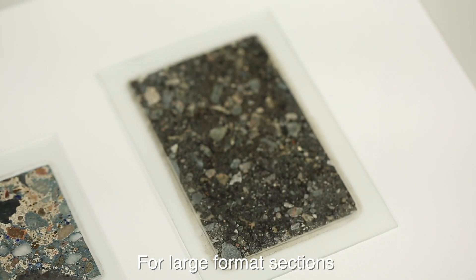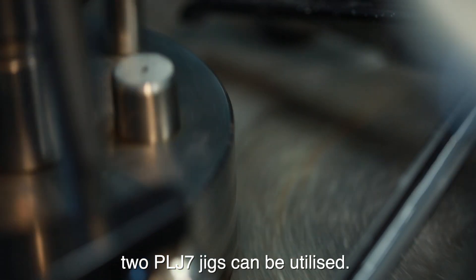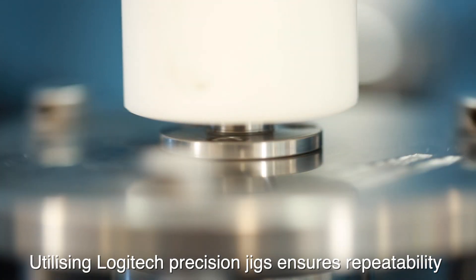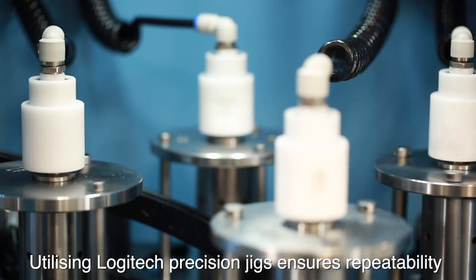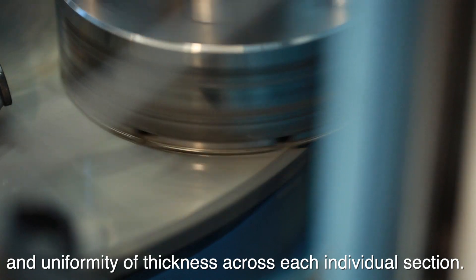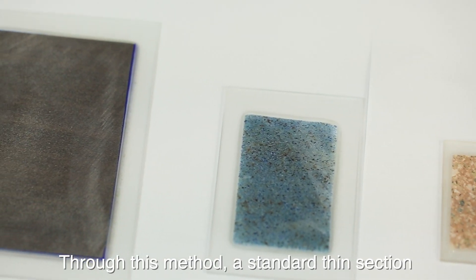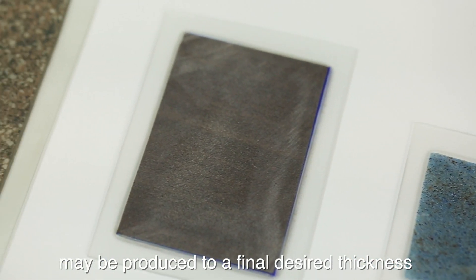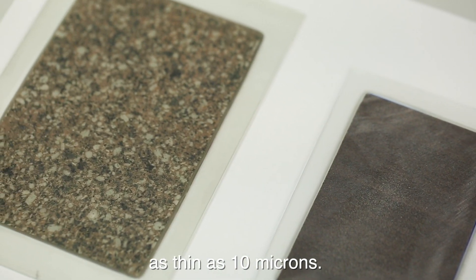For large format sections, two PLJ-7 jigs can be utilised. Utilising Logitech precision jigs ensures repeatability and uniformity of thickness across each individual section. Through this method, a standard thin section may be produced to a final desired thickness as thin as 10 microns.